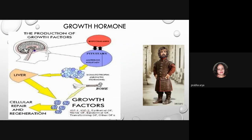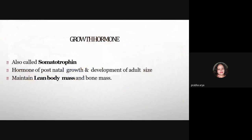These growth factors participate in cellular repair and regeneration. Defects in the receptors for these growth factors, or a lack of growth hormone itself, or defects in the downstream signaling cascade can cause different types of dwarfism, which we will discuss in pathophysiology. Growth hormone, also called somatotropin, is released postnatally and is responsible for the development of adult size. It maintains lean body mass and bone mass by increasing protein synthesis while mobilizing fatty acids for energy, thereby sparing carbohydrates.